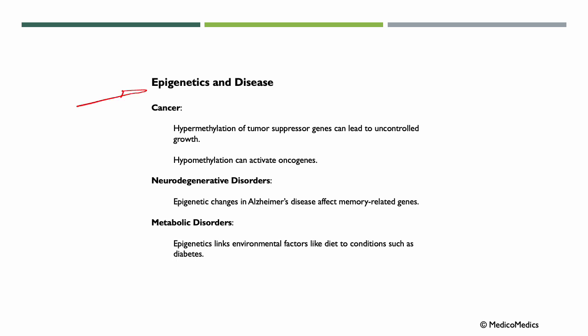Epigenetics and disease. For example in cancer, hypermethylation of tumor suppressor genes like a tumor suppressor gene could be P53 or as mentioned several times in these lectures, the BRCA1 gene. Hypermethylation of these tumor suppressor genes can silence their function, leading to uncontrolled growth. Hypomethylation can activate oncogenes which promote cancer progression.